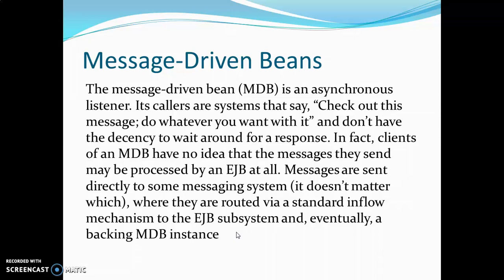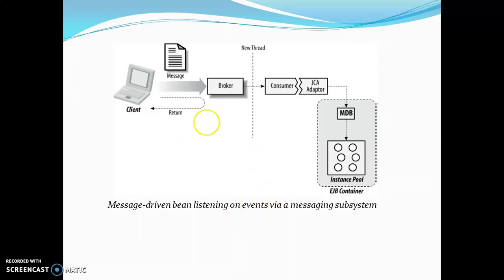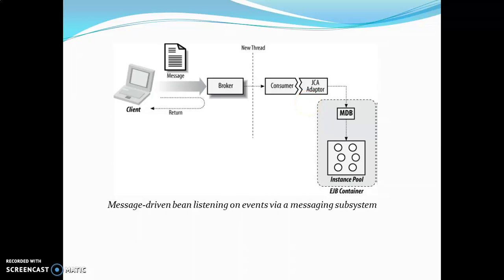As soon as we make use of some message sending, it is just going to send the messages. Whenever a client makes use of one request by sending one message, there will be a broker architecture in between. You must be a subscriber to that particular message. The message will be created in the form of a thread and the consumer will be served by making use of a Java JCA adapter (Java Connector Architecture adapter). Through that adapter, there will be an EJB container wherein we will have a message driven bean which creates instances of different messages.